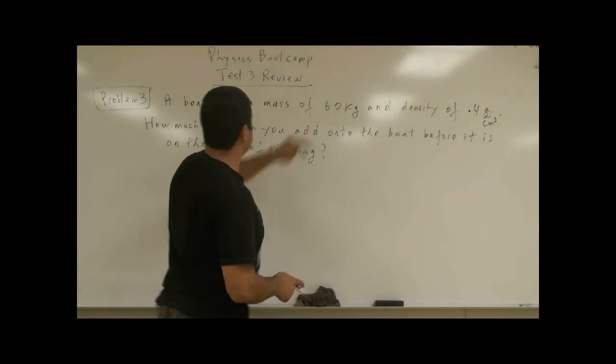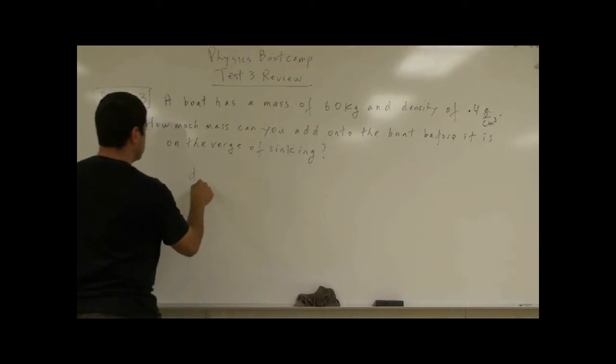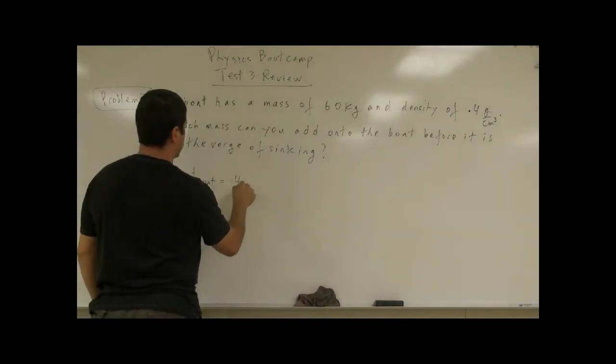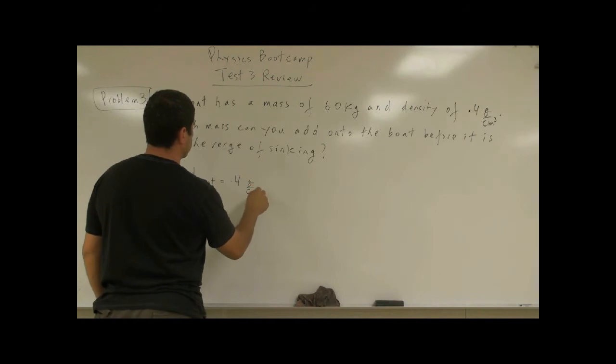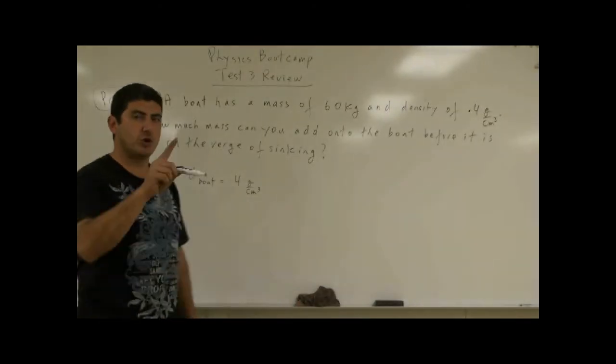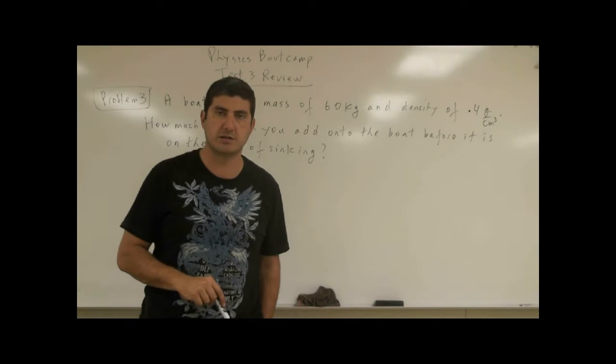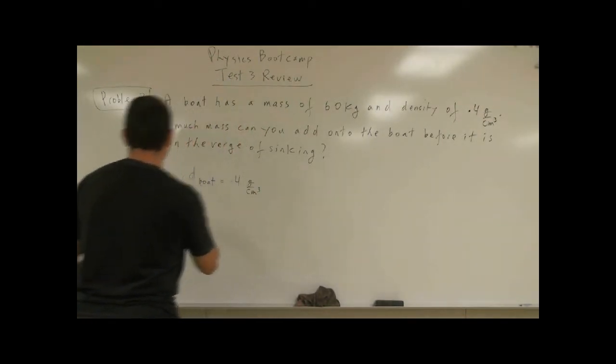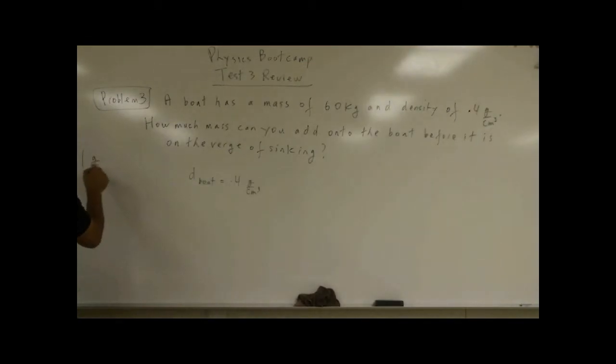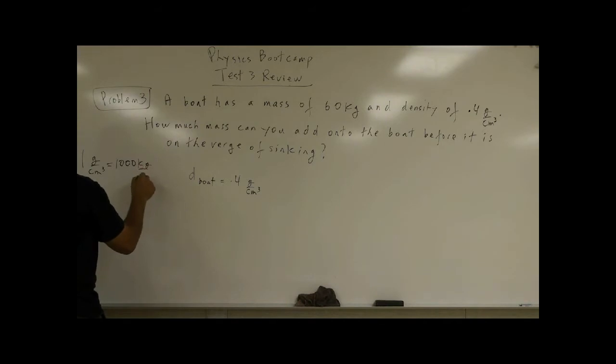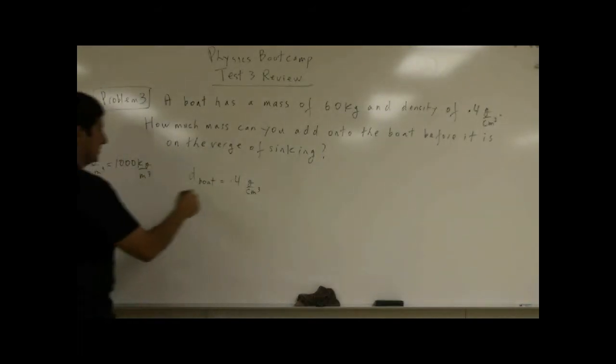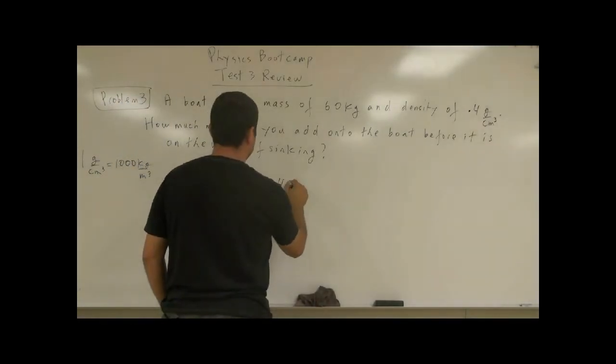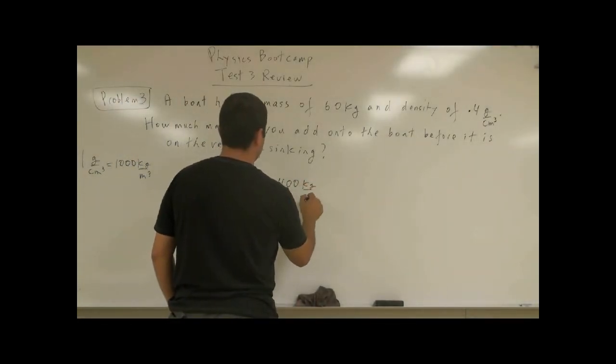We've got to say the density of the boat is equal to 0.4 grams per cubic centimeter. Let's change that to kilograms per cubic meter. This one is better to change. So remember we learned 1 gram per cubic centimeter is equal to 1,000 kilograms per cubic meter. So 0.4 would be 400. That's equal to 400 kilograms per cubic meter.